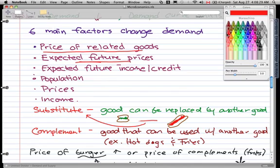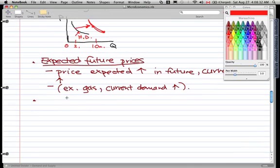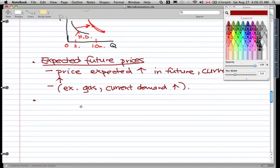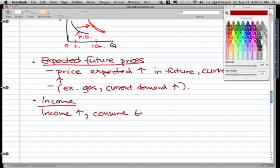The second thing is income. I'm not going to do these in a particular order, so income: when income rises, consumers buy more of most goods. The demand curve will shift right in this case. That's logical reasoning.